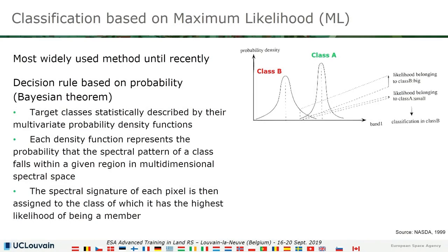For the supervised algorithm, we have the maximum likelihood. This was probably until recently the most widely used method, and in this algorithm the decision is based on probability. Each target class will be statistically described by what we call the multivariate probability density function.